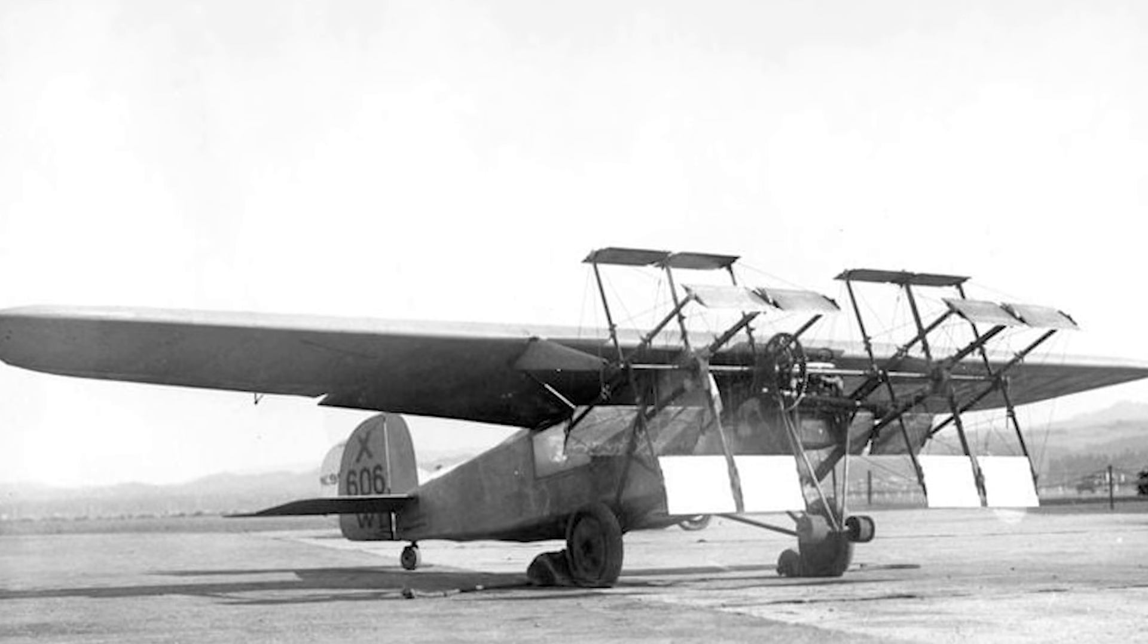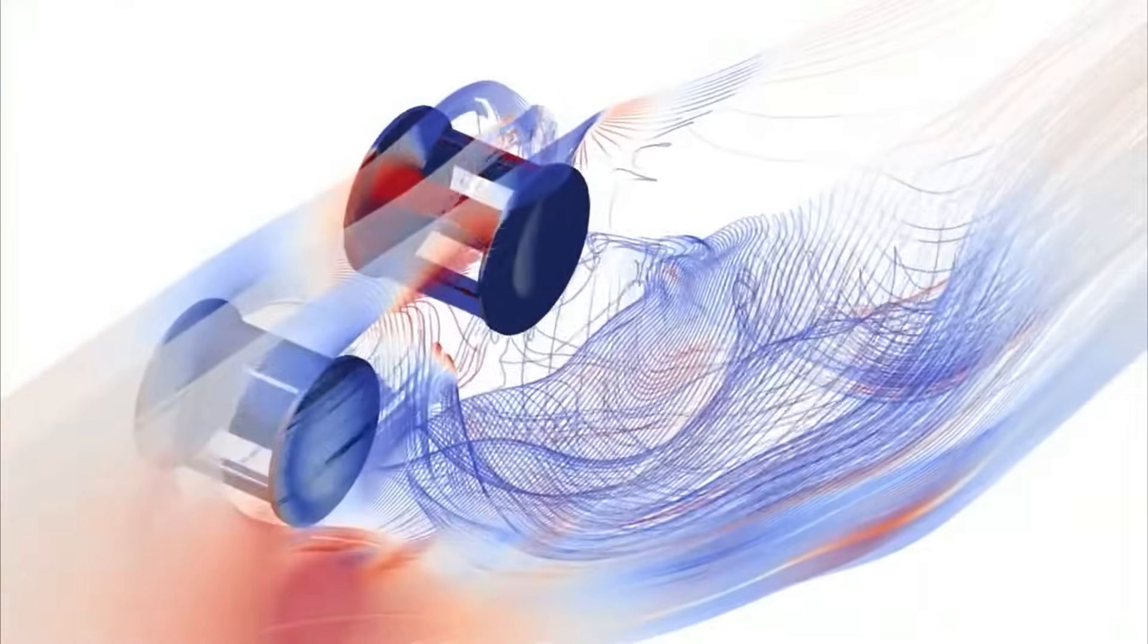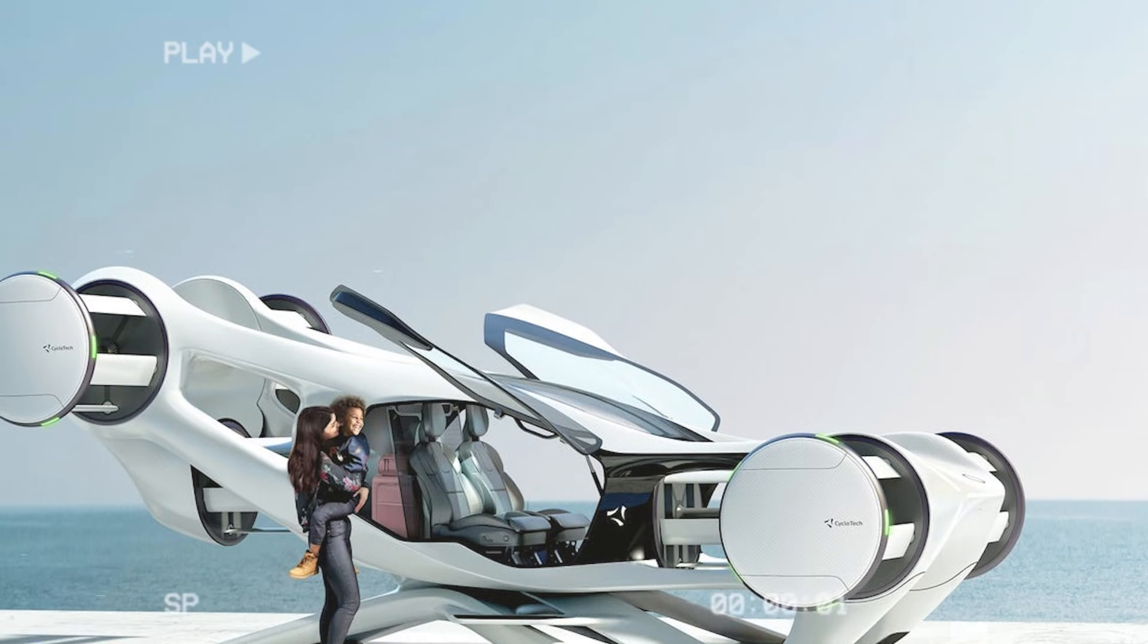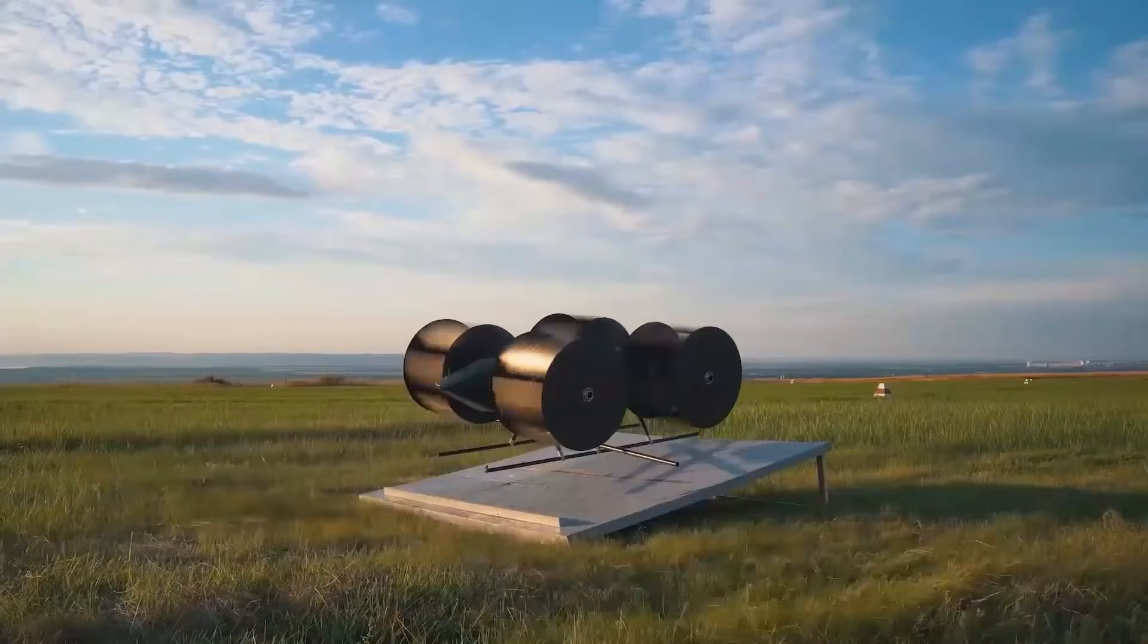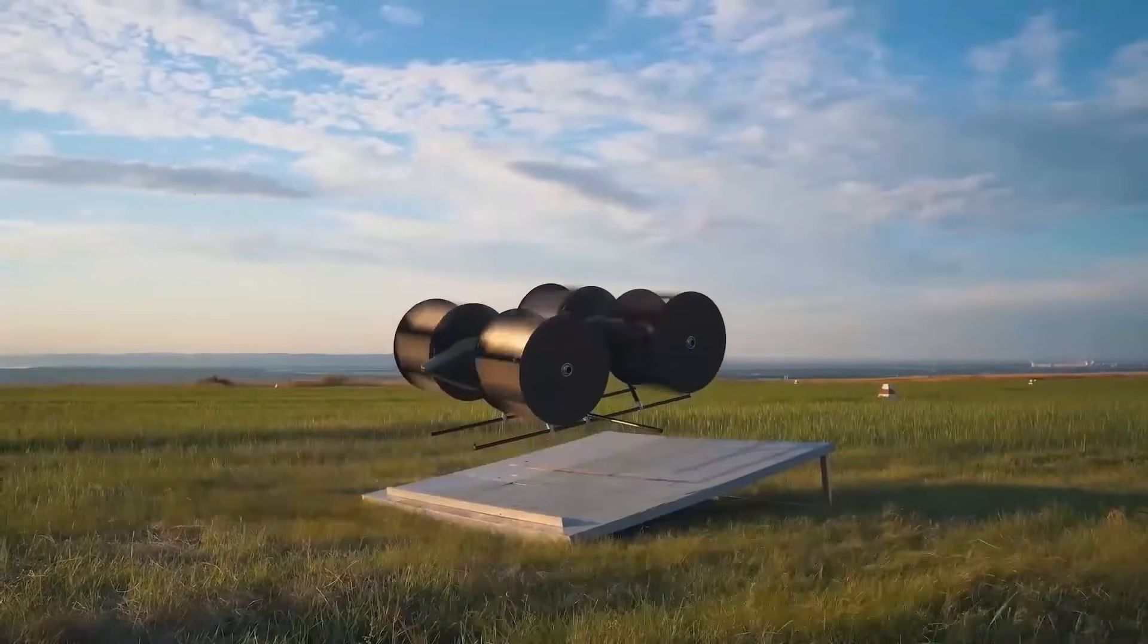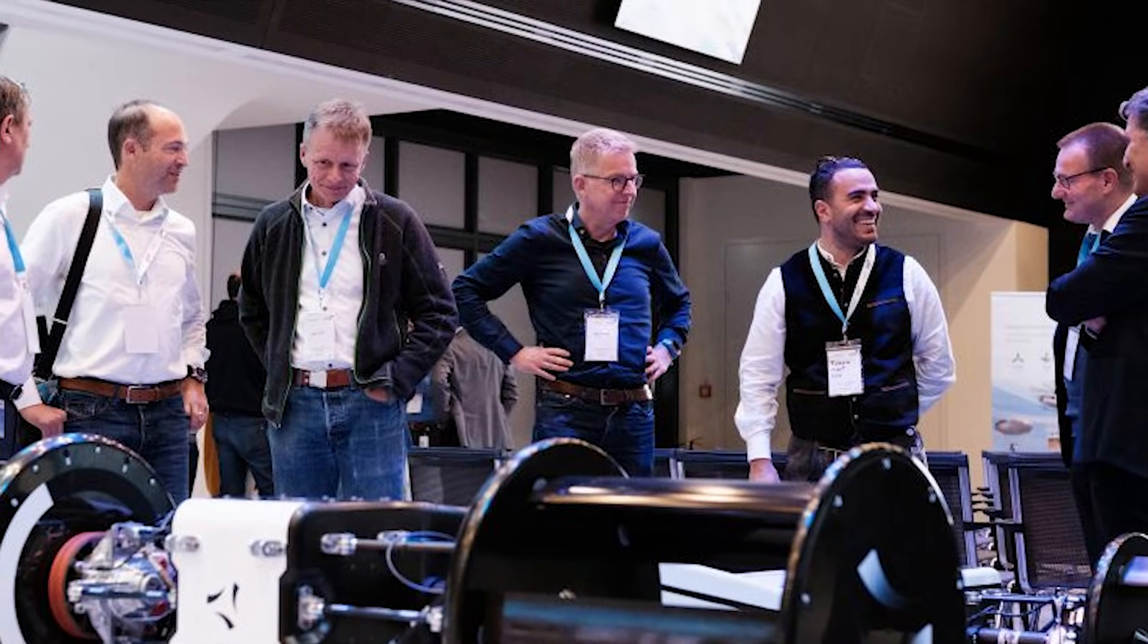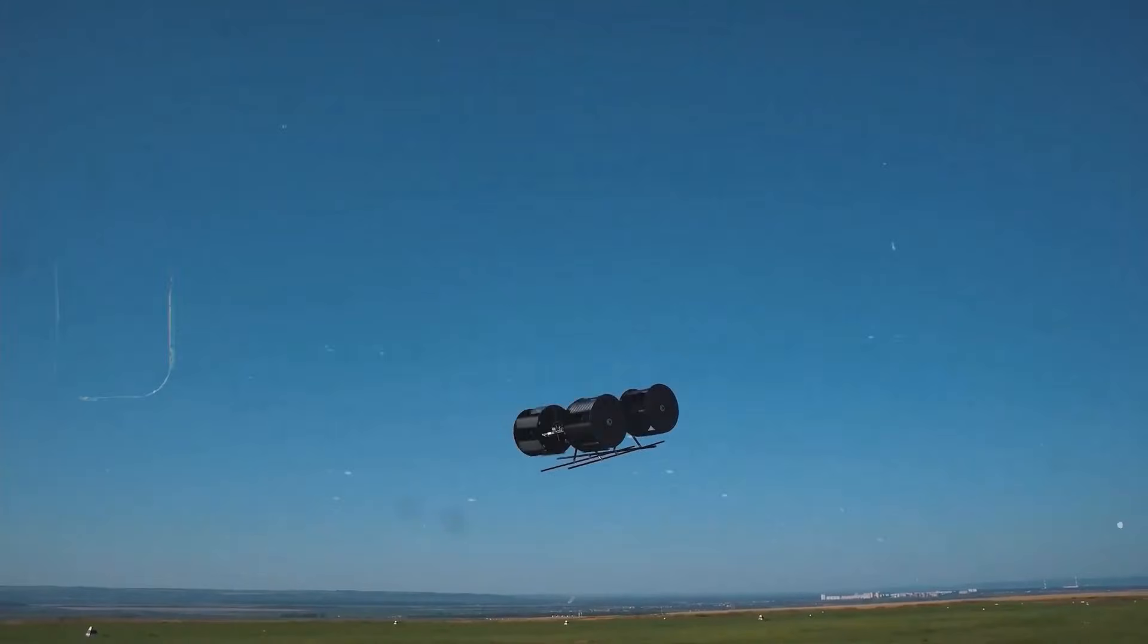One of the most unusual full-scale attempts was the Schroeder S-1 in 1930. This aircraft used a cyclo-rotor purely for forward thrust, giving it an appearance closer to a flying agricultural machine than a conventional airplane. While little documentation remains, it stands as evidence that cycloidal propulsion was taken seriously by multiple engineers during aviation's formative years.